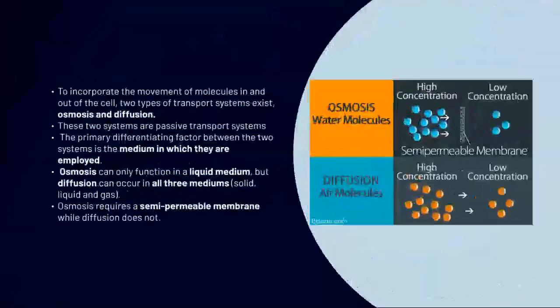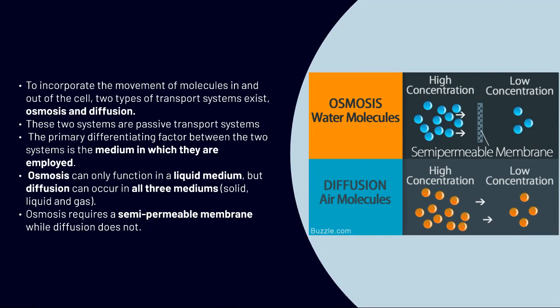So in conclusion, to wrap up what osmosis and diffusion is, to incorporate the movement of molecules in and out of the cell, two types of transport systems exist: osmosis and diffusion. These two systems are passive transport systems. The primary differentiating factor between the two systems is the medium in which they are employed.